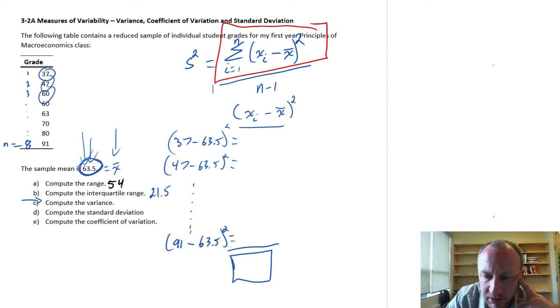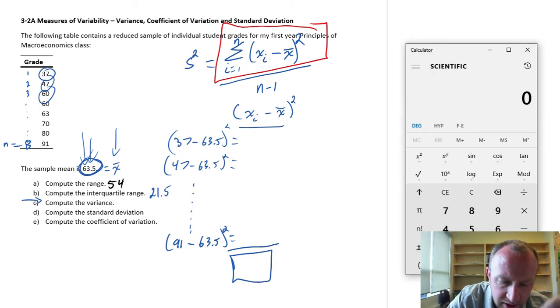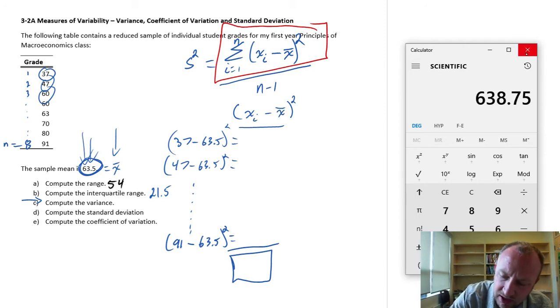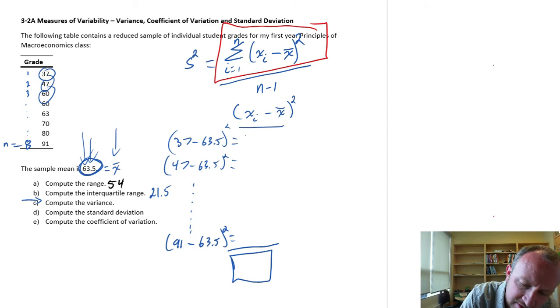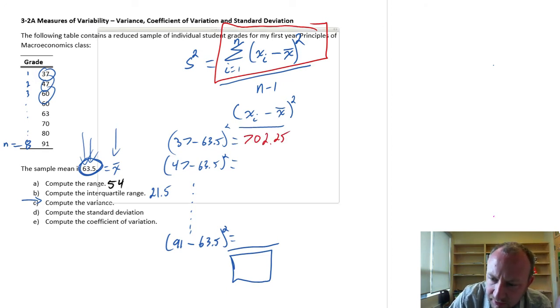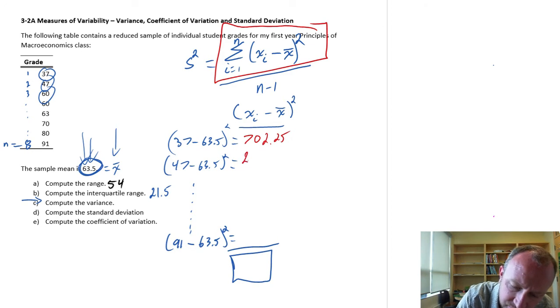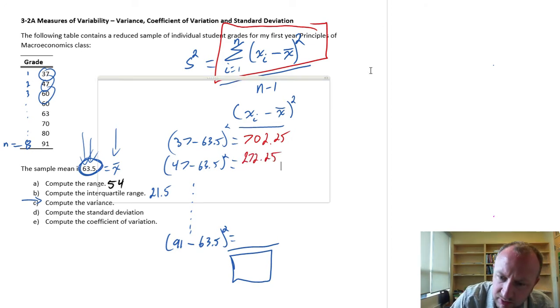Okay, so let's get started. I'm going to pull out the calculator. And I'll start off. So the first one is the first observation. So 37 minus 63.5. So that's the difference. And now I'm going to square that. And I have 702.25. So that was 702.25. Now the next one. So now we go, our next observation is 47 minus 63.5. And I square that, 272.25.